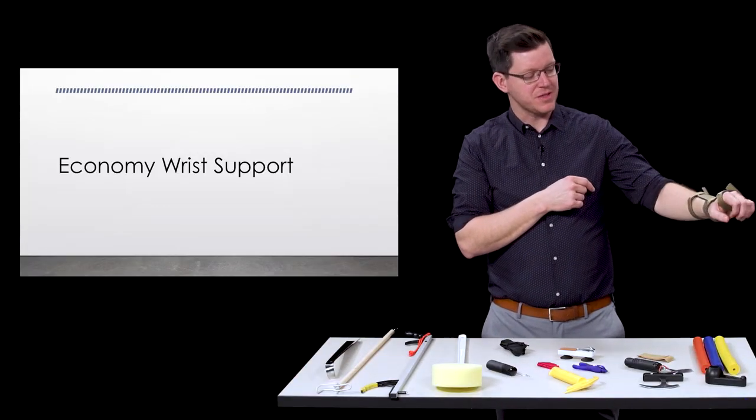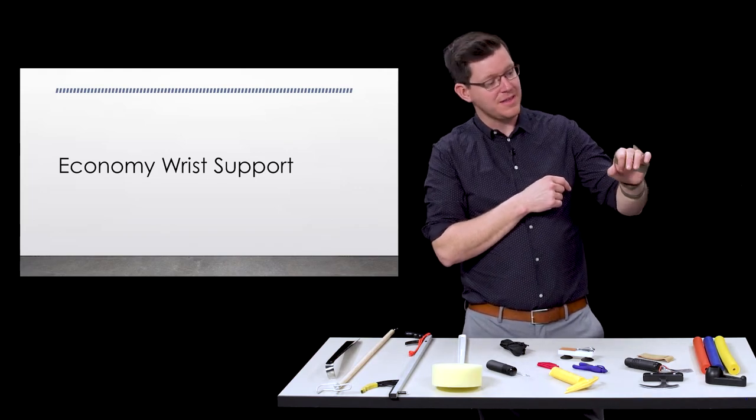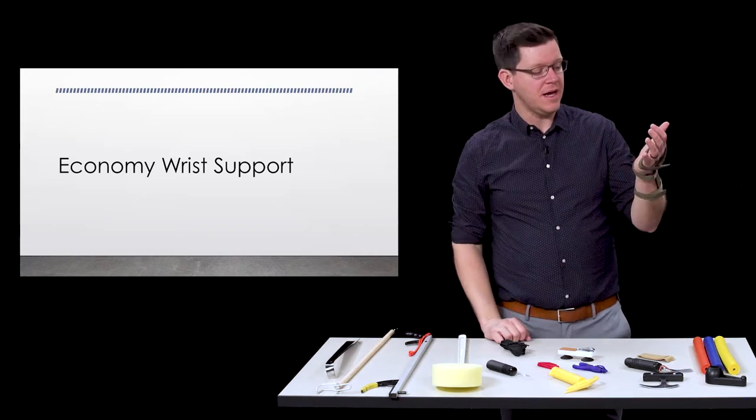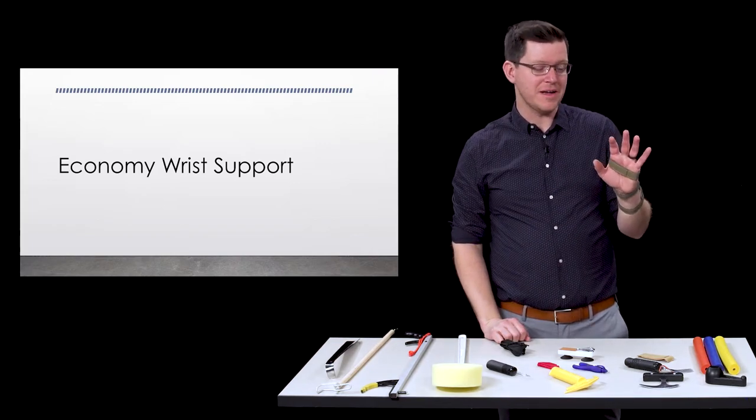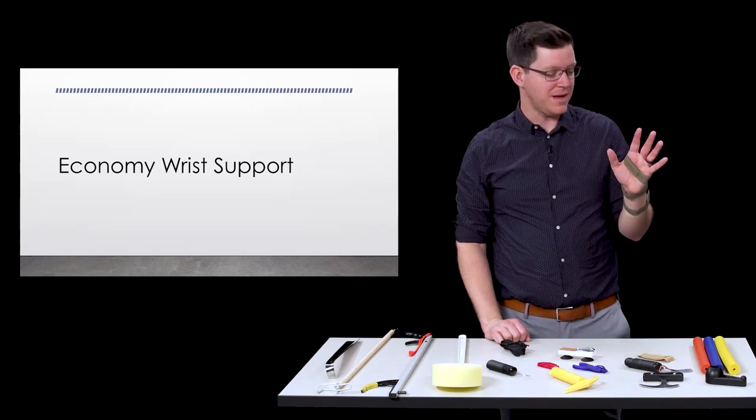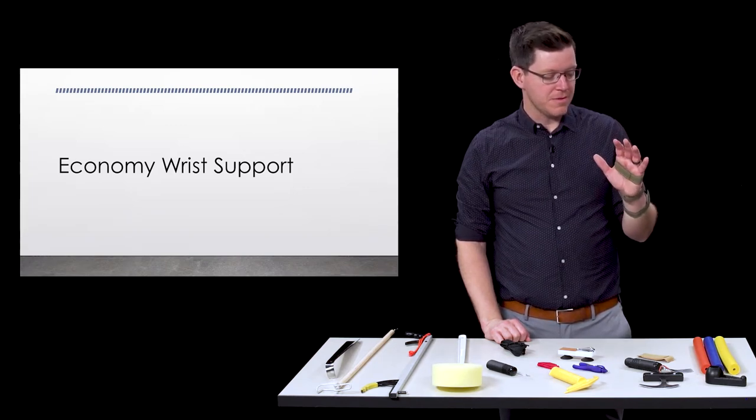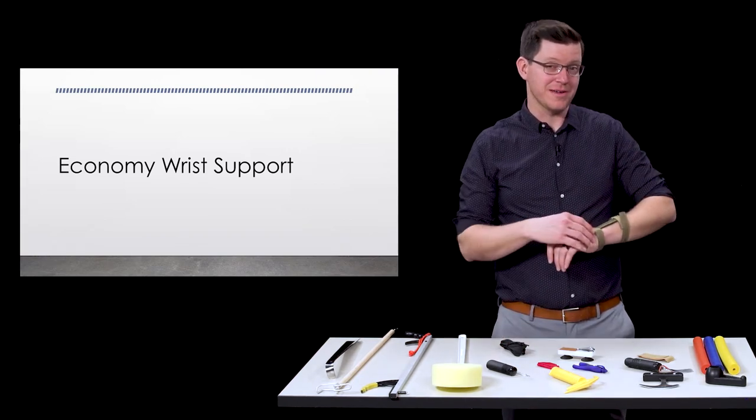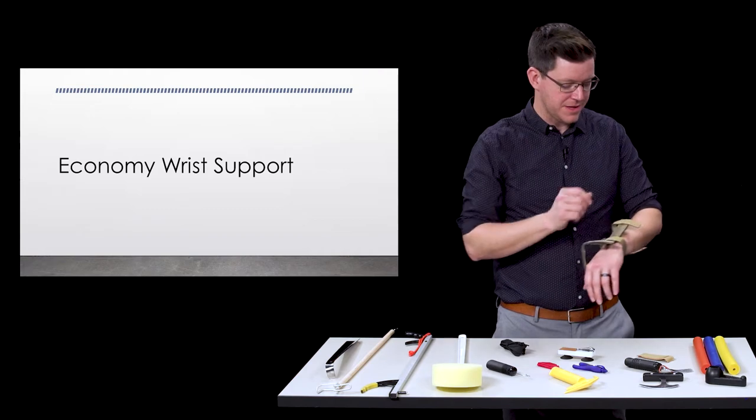Inside the hand here there's a little slot that allows you to put a toothbrush, a spoon or anything else like a stylus for an iPad. You can hold on to things without having to have any hand function. It also keeps your wrist in a good position if you do have some finger strength left. I wouldn't wear this all the time, probably choose it while you're doing that functional activity.